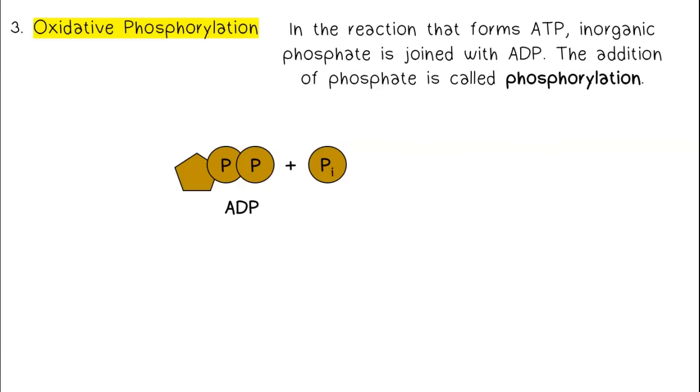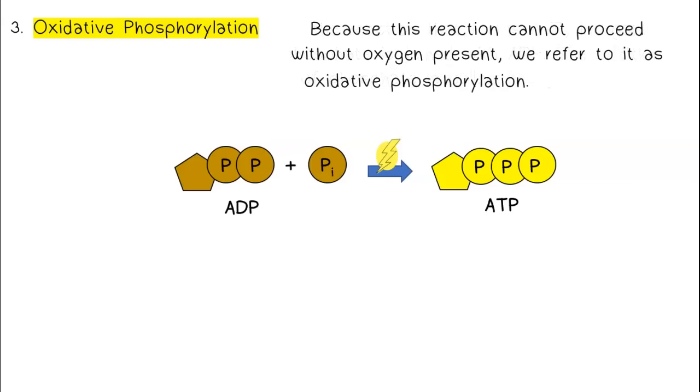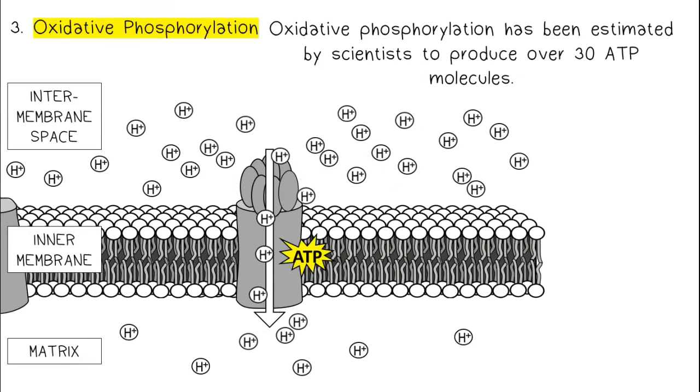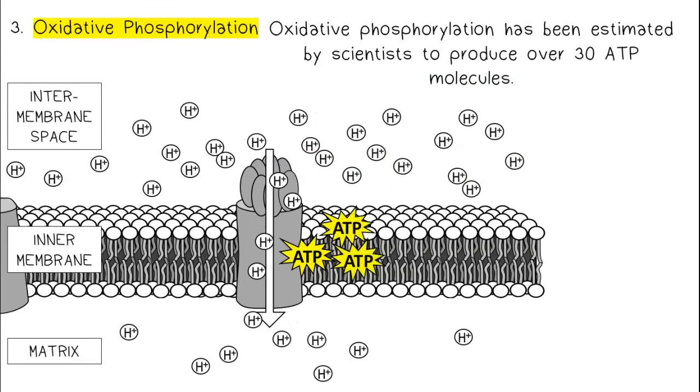In the reaction that forms ATP, inorganic phosphate is joined with ADP. The addition of phosphate is called phosphorylation. Because this reaction cannot proceed without oxygen present, we refer to it as oxidative phosphorylation. Oxidative phosphorylation has been estimated by scientists to produce over 30 ATP molecules.